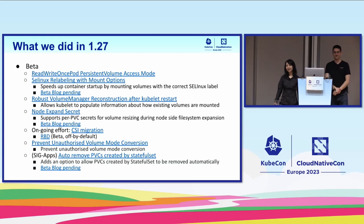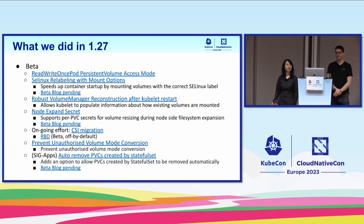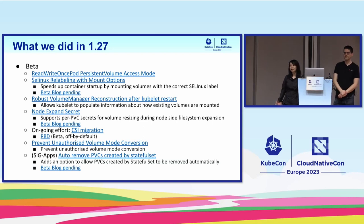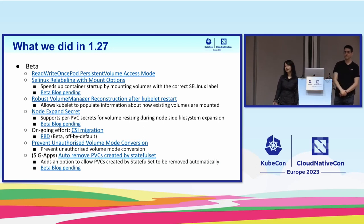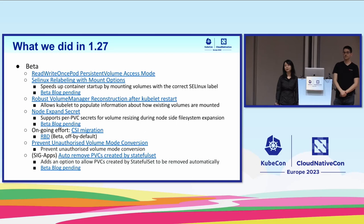In 1.27, we moved a lot of features to beta. We have a SELinux relabeling feature that speeds up container startup time by mounting volumes with the correct SELinux label instead of changing each file on the volumes recursively. We also have a robust volume manager reconstruction feature — a refactoring of the volume manager code that allows Kubelet to provide more information about how existing volumes are mounted, helping to rebuild and clean up volumes at Kubelet restart time.